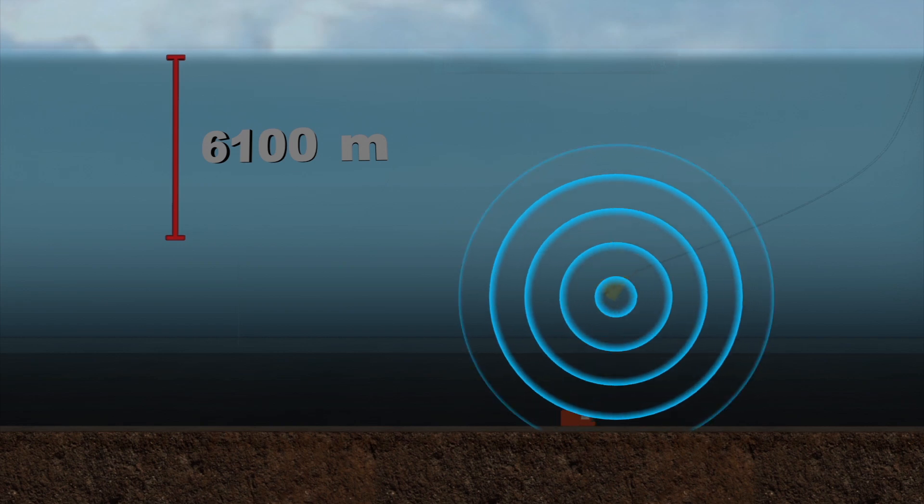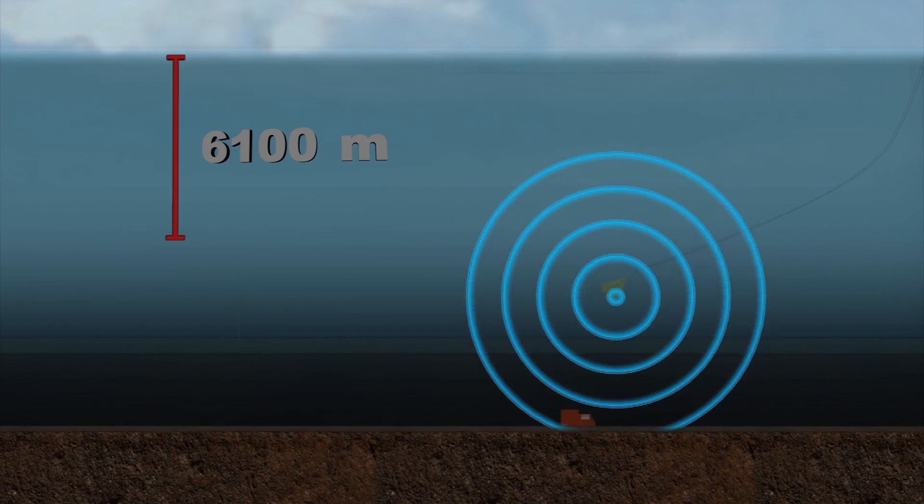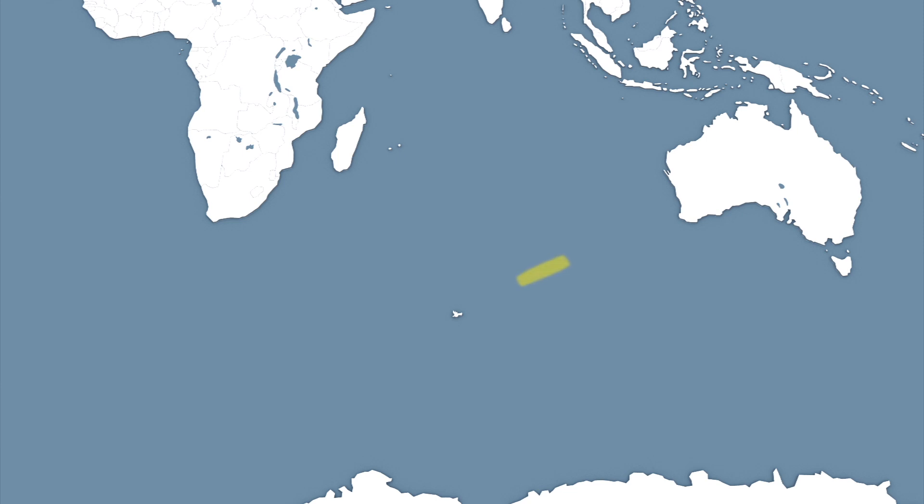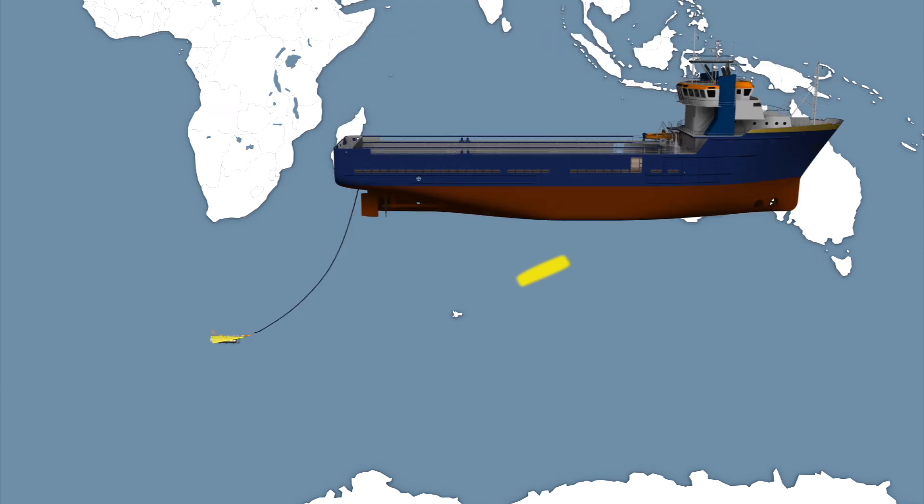It can track the devices at depths of 6,100 meters. A pair of TPL 25s were deployed aboard the Seahorse Standard, a Royal Australian Navy rescue support vessel that will tow them through the search area approximately 2,500 kilometers southwest of Perth, Australia.